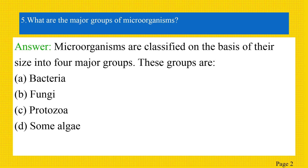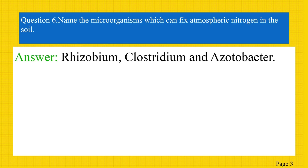The next question: Name the microorganisms which can fix atmospheric nitrogen in the soil. Answer: Rhizobium, Clostridium, and Azotobacter are microorganisms that can fix atmospheric nitrogen in the soil.